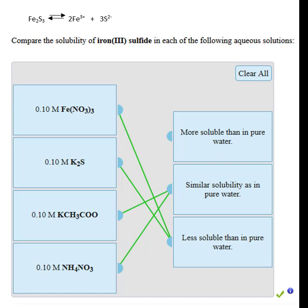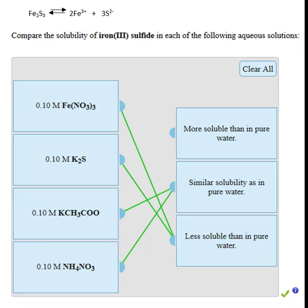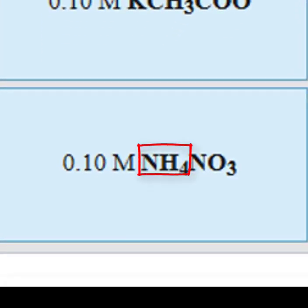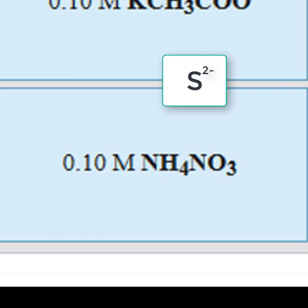Neither one are common ions. Although, in the case of ammonium nitrate, ammonium NH4+ is a weak acid, and the sulfide ion is a weak base. And there is a small amount of acid-base neutralization between the sulfide and the ammonium ion.